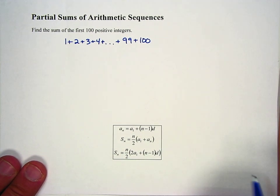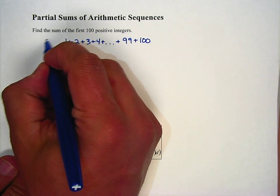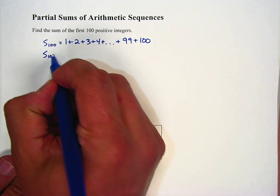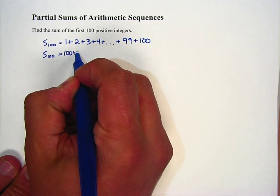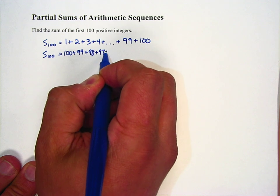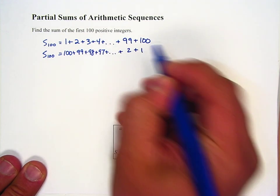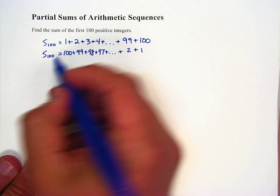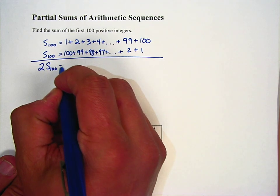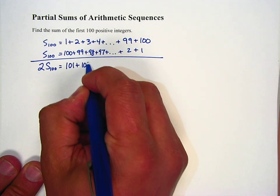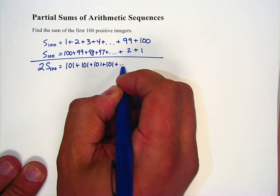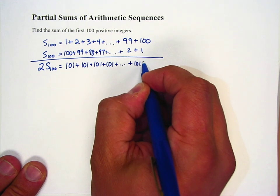He figured out that the sum of the first 100 numbers — he could then reverse the order, writing 100 down to 1. When he adds those two together, he gets 2·S₁₀₀ equals 101 plus 101 plus 101 plus 101, dot dot dot, plus 101 plus 101.